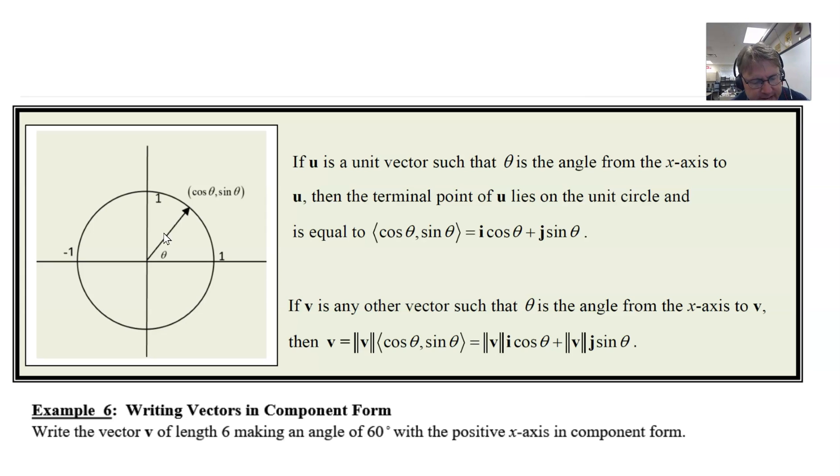The terminal point of vector u lies on the unit circle. And therefore, you should realize that this ordered pair is going to be cosine theta, comma, sine theta, just like you learned before.